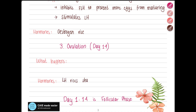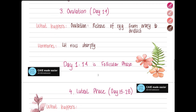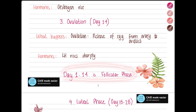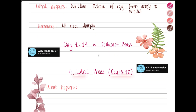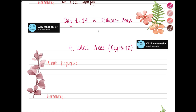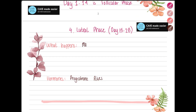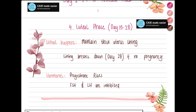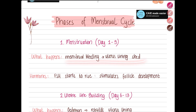On day 14 ovulation occurs — LH rises sharply, causing the release of the egg from the ovary into the oviduct. Day 1 to day 14 is called the follicular phase. After that, from day 15 to day 28 is the luteal phase. During the luteal phase, progesterone rises to maintain the thick uterus lining. If fertilization occurs, the lining is maintained beyond day 28; if there is no fertilization, progesterone drops and the lining breaks down.